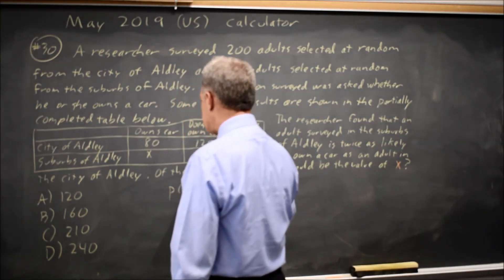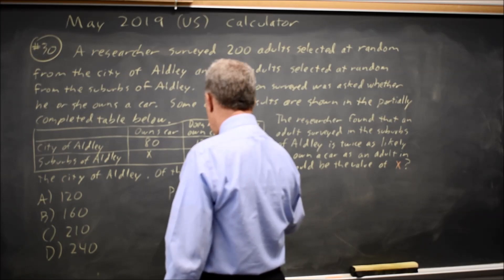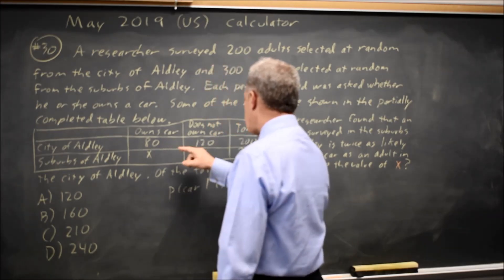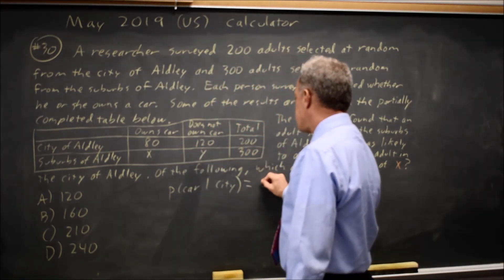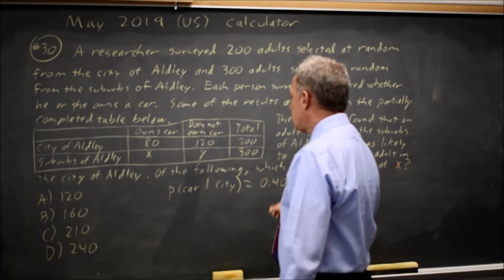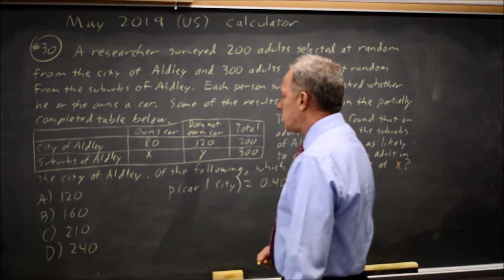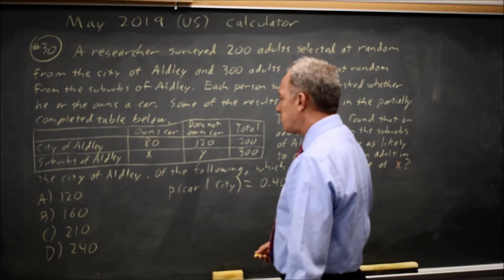The probability of a car given that we're in the city is 80 over 200, which is 0.4 or 40%. If adults in the suburbs are twice as likely,